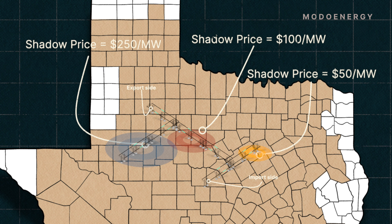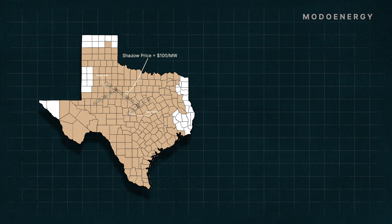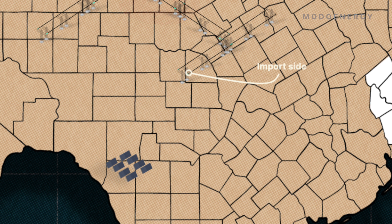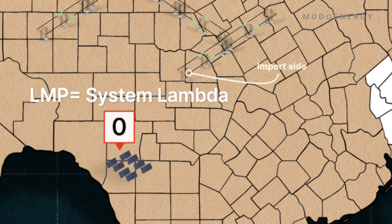Once there's a shadow price for every constraint on the system, ERCOT can then determine LMPs. Imagine for a moment that there's just a single congestion constraint in all of ERCOT. If a resource has no impact on the flow across that constraint — which tends to happen if it's located far from the congestion — then its shift factor will actually just be zero.